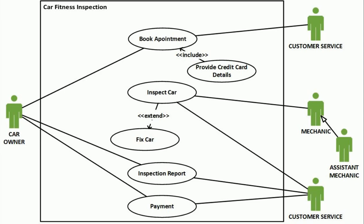For example, consider a car fitness inspection in a mechanic shop. For car inspection, a customer — a car owner — needs to book an appointment first, and to book that appointment they need to provide credit card details, just in case the customer fails to turn up, as there is a minimum charge for no-show. Once they book the appointment, on the booked date and time they come for the car inspection.